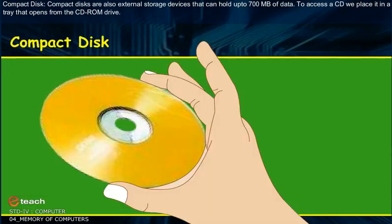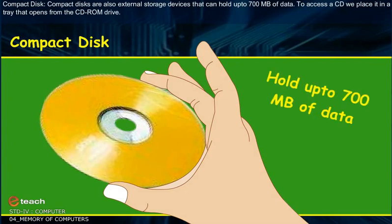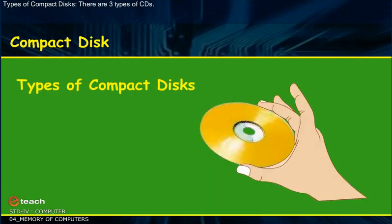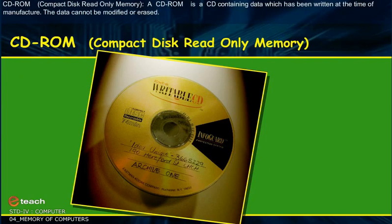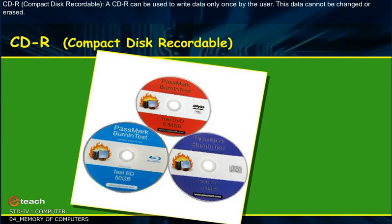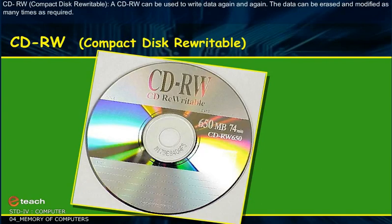Compact Disk: Compact disks are external storage devices that can hold up to 700 MB of data. To access a CD, we place it in a tray that opens from the CD-ROM drive. There are three types of CDs: 1. CD-ROM (Compact Disk Read-Only Memory) — a CD-ROM contains data written at the time of manufacture; the data cannot be modified or erased. 2. CD-R (Compact Disk Recordable) — a CD-R can be used to write data only once by the user; this data cannot be changed or erased. 3. CD-RW (Compact Disk Rewritable) — a CD-RW can be used to write data again and again; the data can be erased and modified as many times as required.